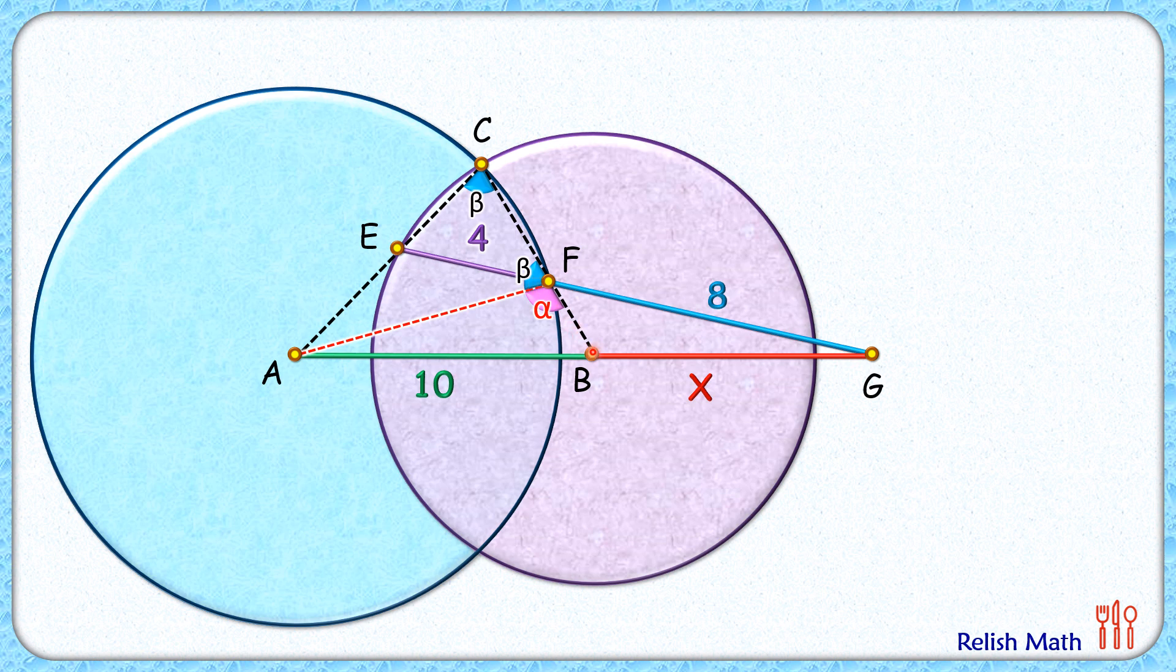Let's also join BE here. With respect to the purple circle, BE and BC are both radii, so this triangle is isosceles, and angle E will be beta degrees. Since alpha and beta are supplementary angles, this remaining angle here will be alpha degrees.